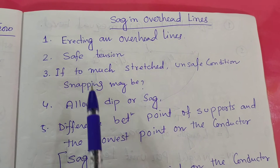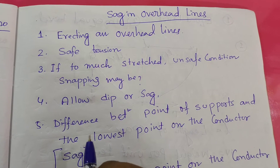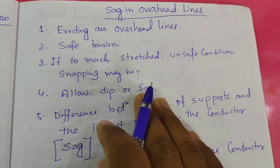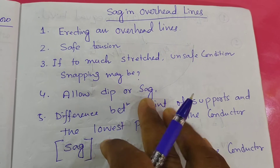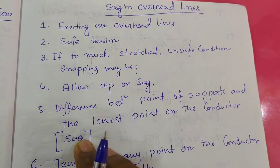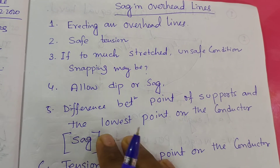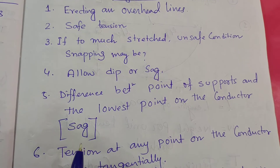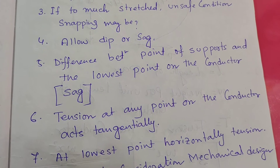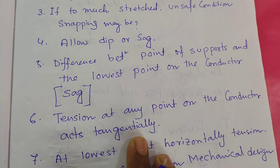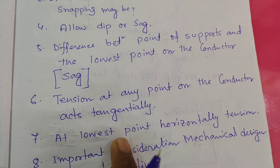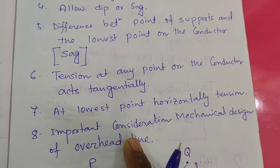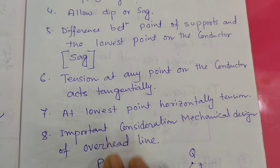It should maintain safe tension on the conductors. If too much stretch is provided, then unsafe conditions — snapping may occur and affect the SAG. The difference between the point of supports and the lowest point on the conductor is called SAG. The tension at any point on the conductor is tangential, and the tension at the lowest point is horizontal. This is an important consideration in the mechanical design of the overhead line.